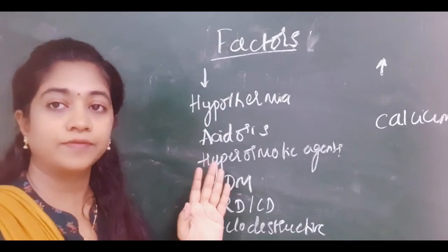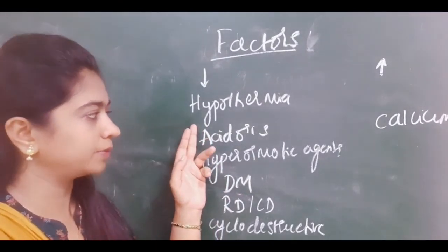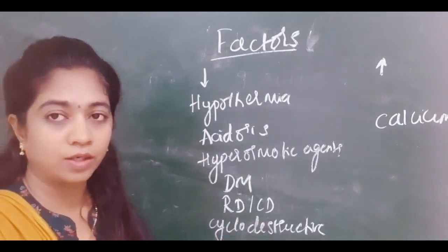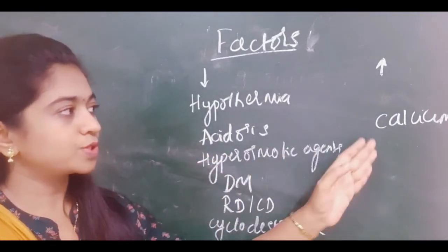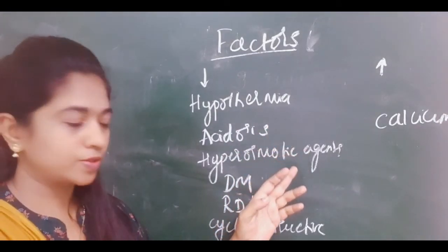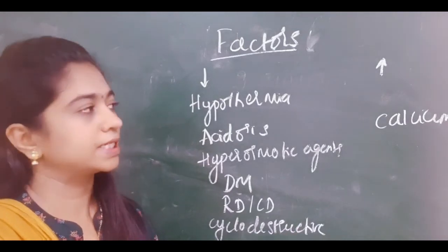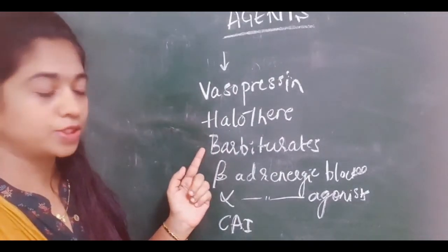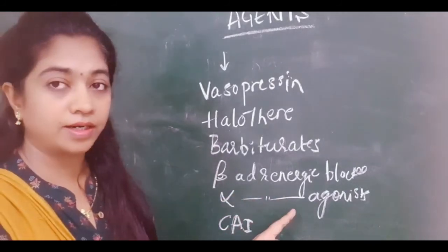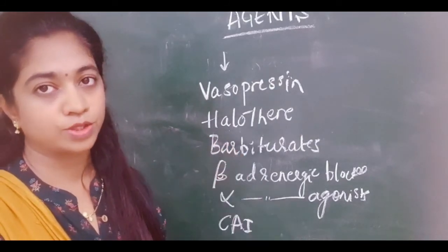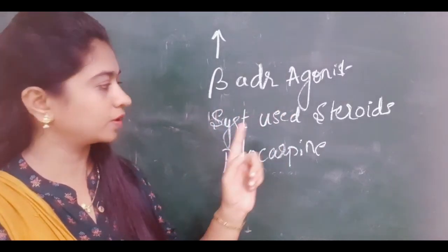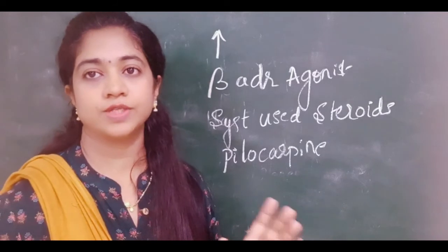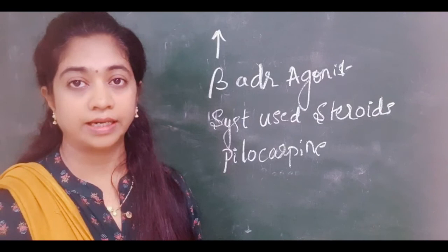Factors that decrease aqueous humor formation include hypothermia, acidosis, hyperosmotic agents, diabetes, retinal detachment, choroidal detachment, and cyclo-destructive procedures. The opposite conditions — hyperthermia, alkalosis, hypoosmotic agents, and calcium — increase production. Drugs that decrease aqueous humor production include vasopressin, halothane, barbiturates, beta-adrenergic blockers, alpha-adrenergic agonists, and carbonic anhydrase inhibitors. Drugs that increase production include beta-adrenergic agonists, systemic corticosteroids, and pilocarpine, which can slightly increase aqueous humor production.